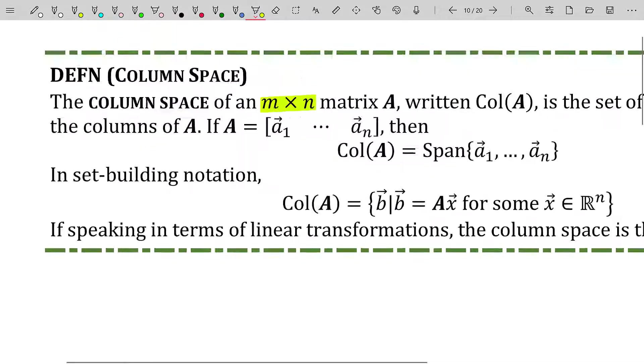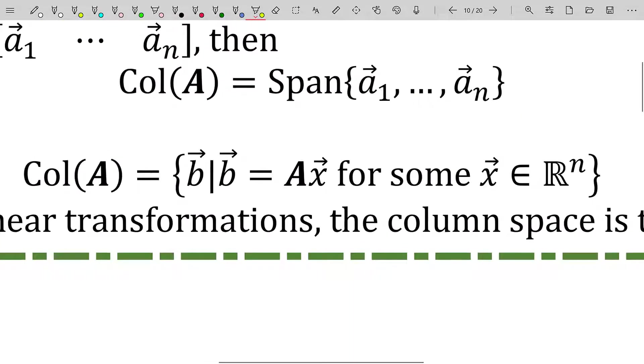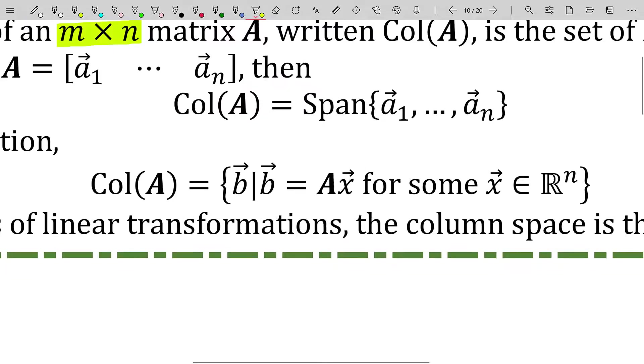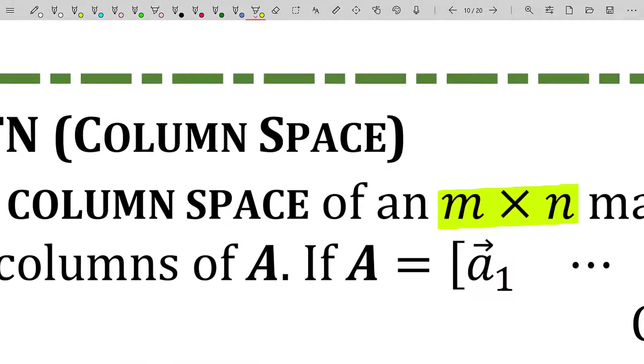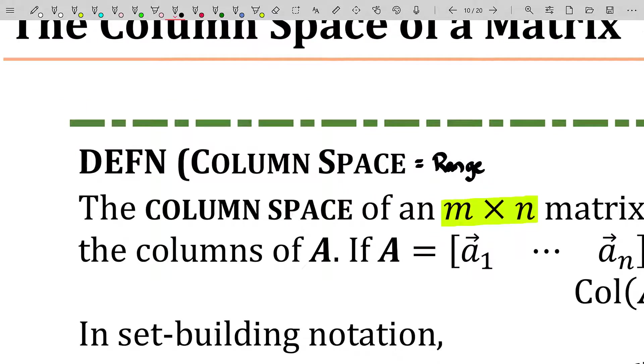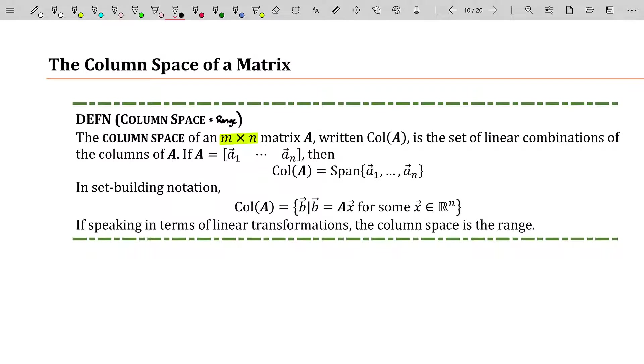So this set we actually did have a name for. When you talk about linear transformations, this set of vectors that forms the column space of A is actually just the range of our linear transformation. So the column space is really a fancy phrase for the range of our linear transformation.